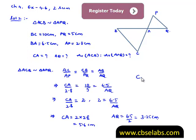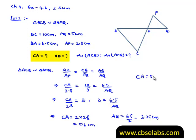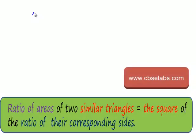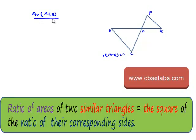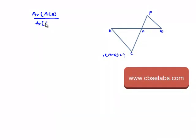Therefore, here we need to find AQ is equal to 5.6 cm. Therefore, here we need to find the ratio of areas of those triangles, that is area of triangle ACB to the area of triangle APQ.